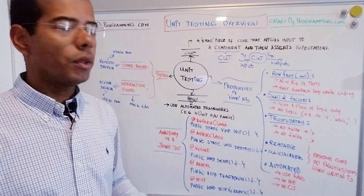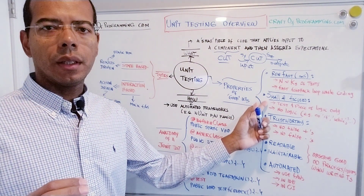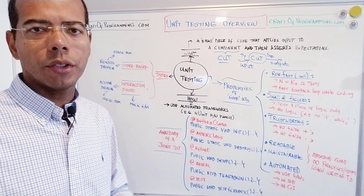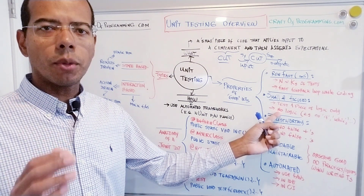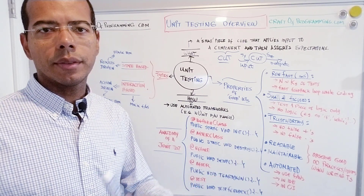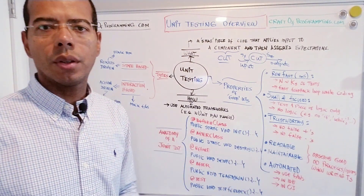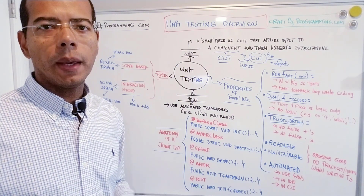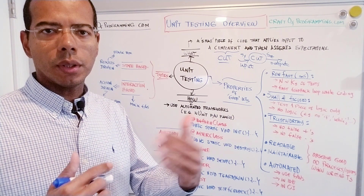Another good property of unit tests is that they need to be small and focused. Typically a test is a method and it should test only one single piece of production code logic. A good heuristic to check that tests are small and focused is that they should not have any control flow statements like ifs, elses, whiles, or loops. If you find yourself needing to implement these in a single test method, that's a sign of bad practice — a smell — and you need to break that method into multiple individual tests.